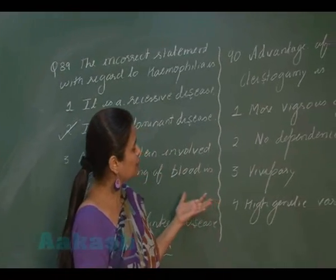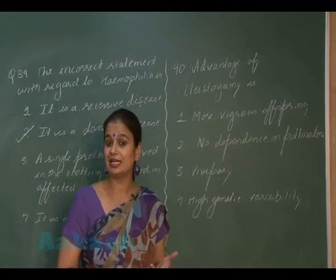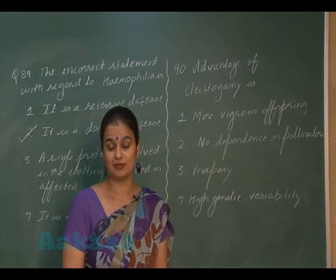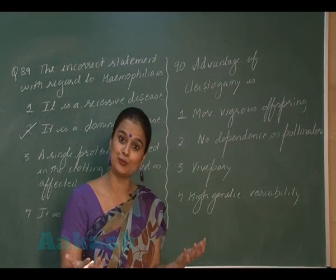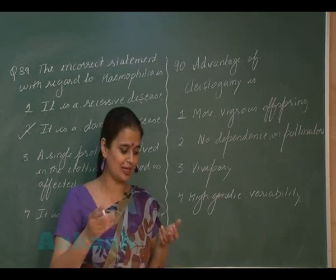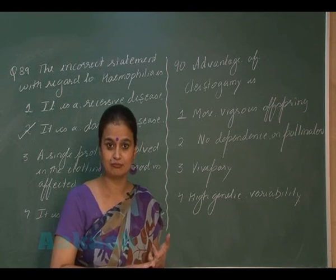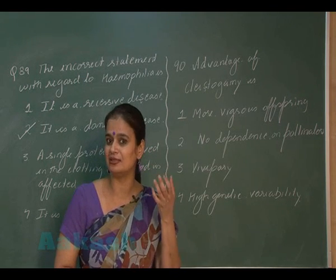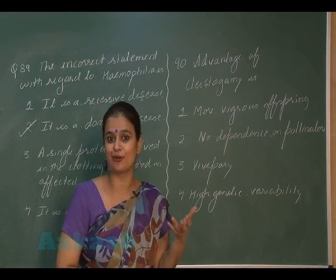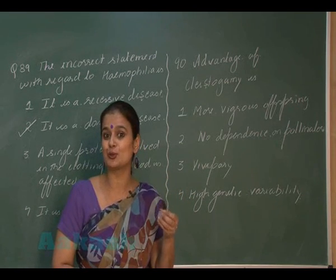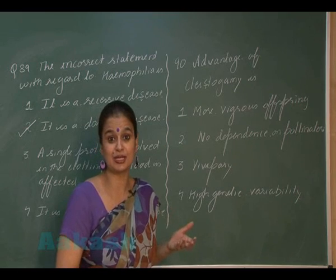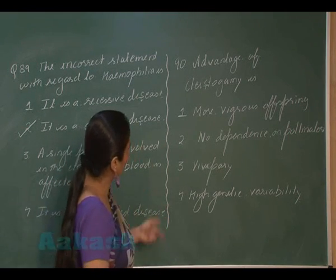In question 90, we have to see what is the advantage of cleistogamy. In cleistogamy, cleistogamous flowers are closed flowers that never open, so pollination occurs in the closed state — self-pollination occurs. The advantage is that the plant does not need to form nectar or edible pollen to attract insects, and there is no requirement for a pollinator to transfer pollen from anther to stigma.